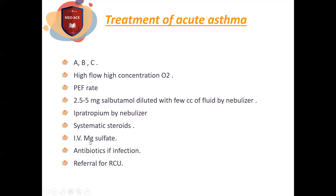If all the above treatment is not enough, we use IV magnesium sulfate. Antibiotics are given if there is a chest infection. Referral to ICU is indicated if the patient is deteriorating or has hypercapnia on ABG. Referral can be done with mechanical ventilation.